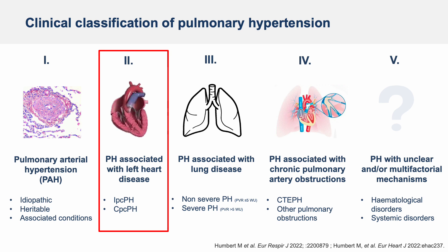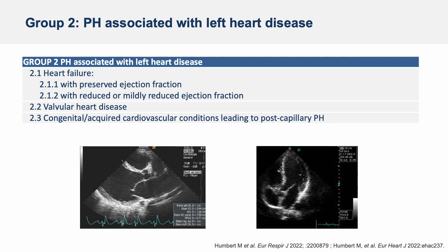Let's move to the second group of PH, called PH associated with left heart disease. In this group, the arteries in the lungs are not as thick or stiff as in PAH, but there are problems with how the heart squeezes or relaxes, or problems with the valves of the left side of the heart. Because of this, the left heart is unable to keep up with blood returning from the lungs, causing a backup of blood which raises pulmonary venous pressure. Group 2 is the most common form of PH and is also called post-capillary pulmonary hypertension. The key tool to identify left heart disorders is echocardiography.